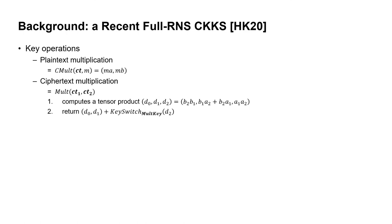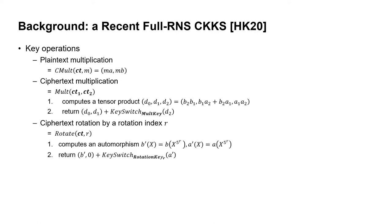I will explain some key operations in CKKS. There is a plaintext multiplication called cimult, which is just an element-wise multiplication between plaintext m and ciphertext ct. The ciphertext multiplication is much more complicated: it first computes a tensor product between input ciphertexts 1 and 2, and for the output 3 polynomials d0 to d2, we perform a key switching on d2 with a key called the multiplication key, then add that with d0 and d1. There is also ciphertext rotation, which does a circular shift on a ciphertext by a rotation index r. It performs an automorphism computing x to the 5^r on both a(x) and b(x), then returns a key switching output with its own rotation key by r.